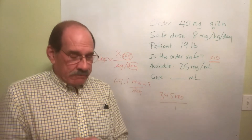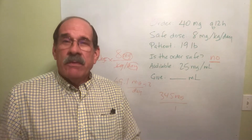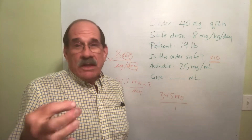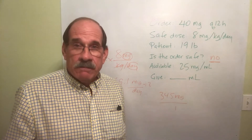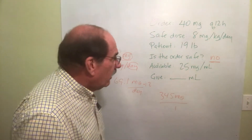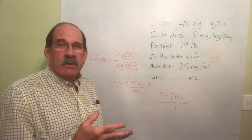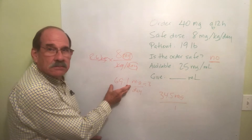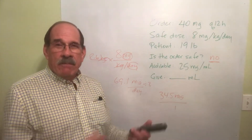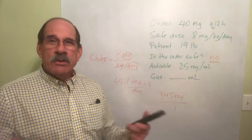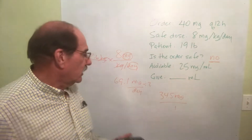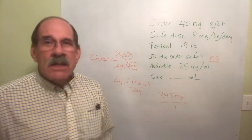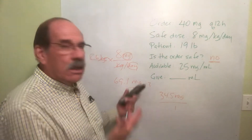Now, several things to realize — in the homework, on the practice quizzes, and on the real quiz, you may have a three-, four-, or five-part question. First question: what's the safe amount for 24 hours or per day? That's the 69.1 mg number. Next question: what's the safe amount per dose or in divided doses? That's the 34.5 mg number. Next question: is the order safe? No.